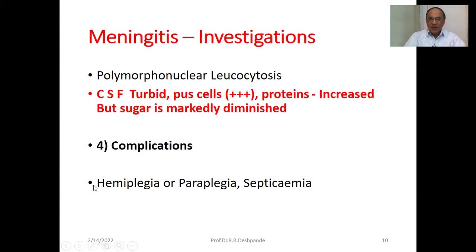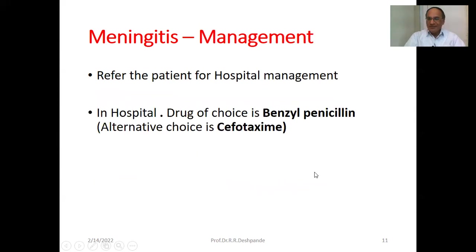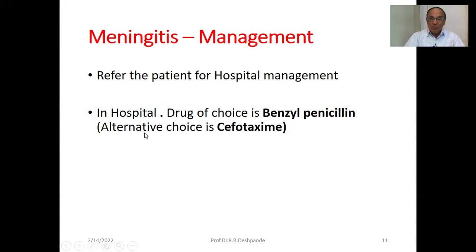Complications of meningitis include hemiplegia, paraplegia, and septicemia — the patient can die. Management: first, refer the patient to the hospital immediately — urgent. In the hospital, the drug of choice is benzyl penicillin; the alternate choice is cefotaxime. These are the antibiotics used.